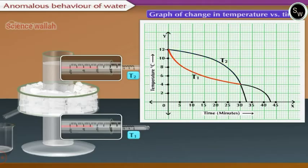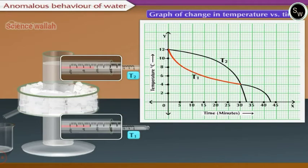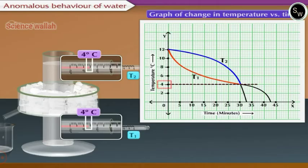However, once the temperature T1 of the lower part reaches 4 degrees Celsius, it remains almost constant at that temperature, while temperature T2 constantly decreases. Thus both thermometers show 4 degrees Celsius at the same time.